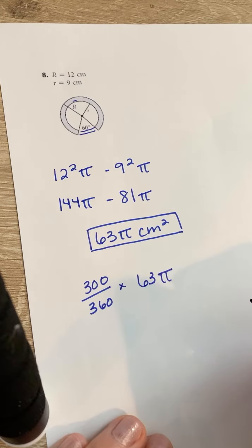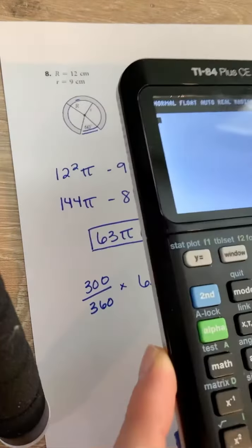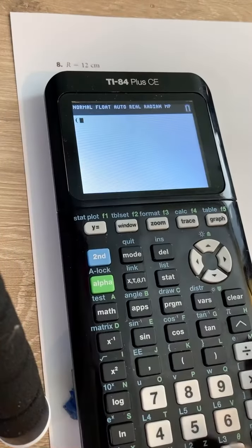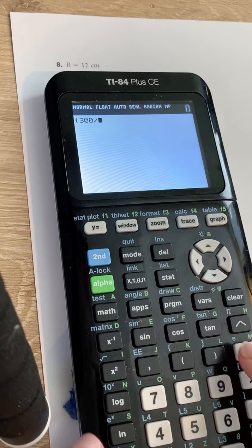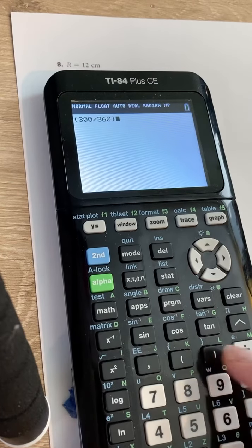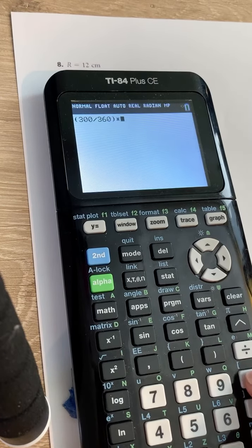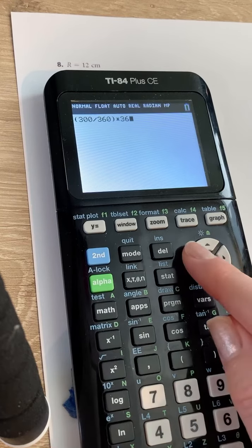They do want you to keep your answers in terms of pi, so how are you going to enter this into your calculator? You're going to take the 300 over 360 in parentheses, and then times by the 63.